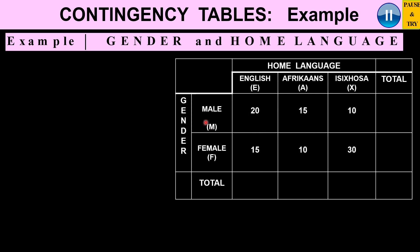To complete the table, we find the totals. Total for English: 35. Total for Afrikaans: 25. Total for Isizulu: 40. Total for males: 45. Total for females: 55. Cross-checking by adding the totals horizontally gives 100, and 35 plus 25 plus 40 also equals 100. There were two variables and each variable had subcategories: for gender, male and female; for home language, English, Afrikaans, and Isizulu.